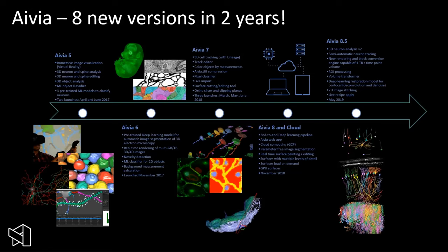This new version of Avia builds on the features we have been developing and introducing over the last two years. In these two years, we have developed and released eight new versions. For example, Avia 7 had three versions: 7, 7.5, and 7.7. The key functionality we added is related to handling super large data sets in 2D, 3D, and 3D over time.